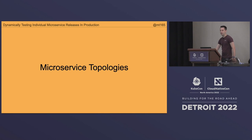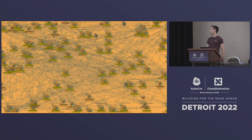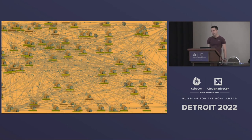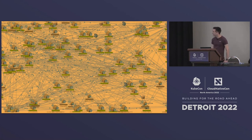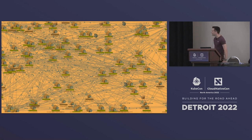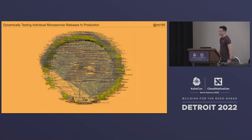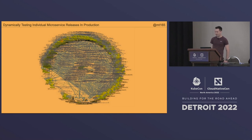Briefly, microservices — what do they look like in production? They might look like this. This is a small part of Netflix's service topology. Apparently they wouldn't give a higher-res image, so maybe they're a little embarrassed for people to be able to read what's going on. Of course you can redraw it to make it more simple. This is also Netflix — they've maybe got a little more connectivity than they should have.